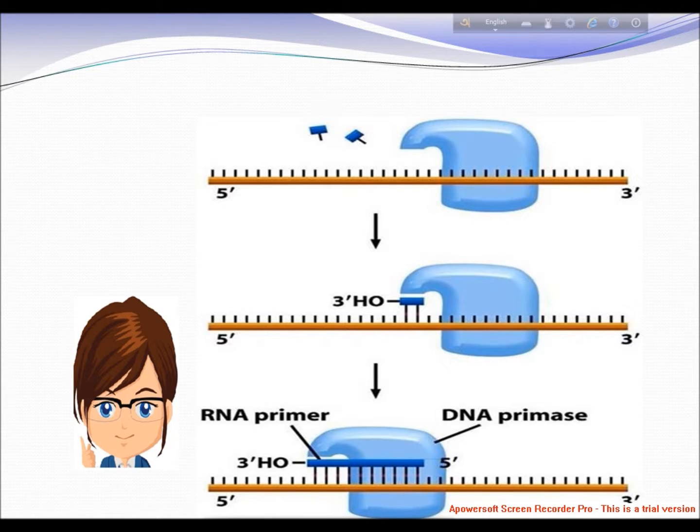Primase also acts as a halting mechanism to prevent the leading strand from outpacing the lagging strand by halting the progression of the replication fork. The rate-determining step in primase is when the first phosphodiester bond is formed with the single-stranded DNA.